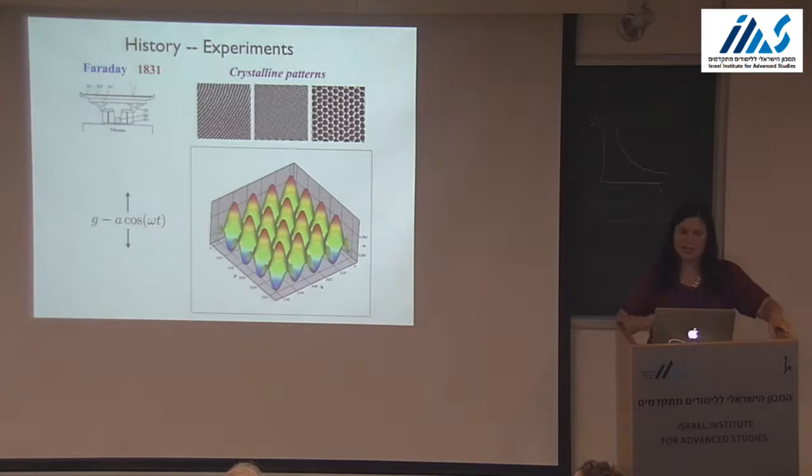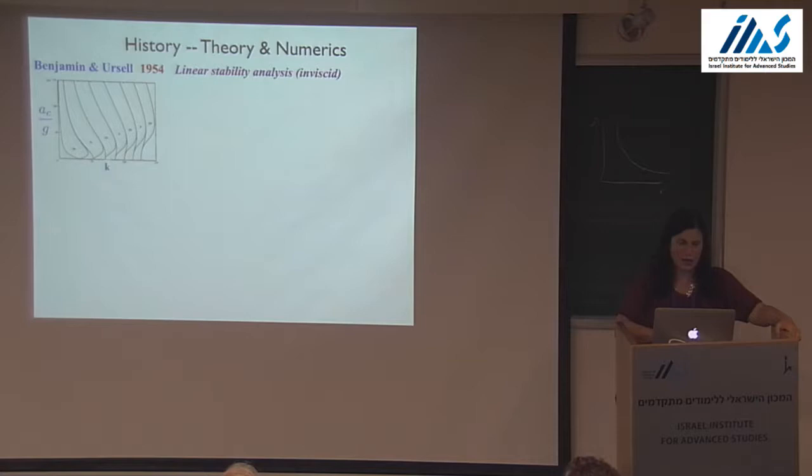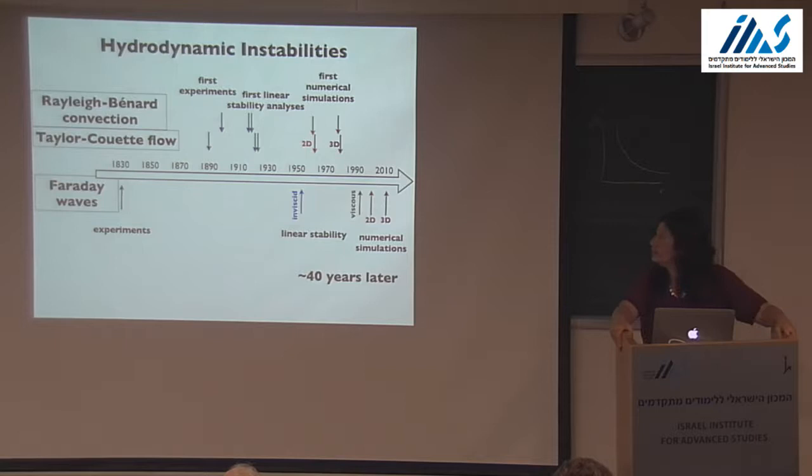From 1831 to 1954 may strike you as a long time — that's a hundred and twenty-three years. And in fact, that gap has been reproduced throughout the history of the Faraday instability.